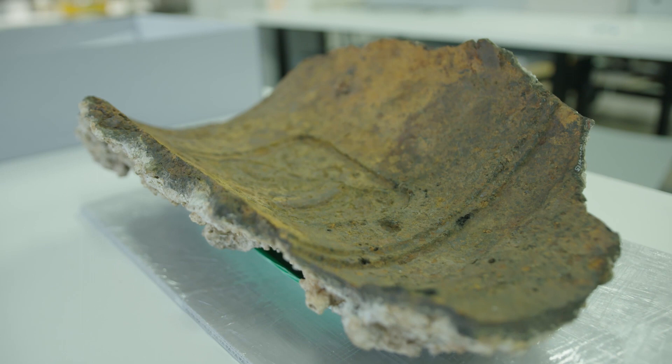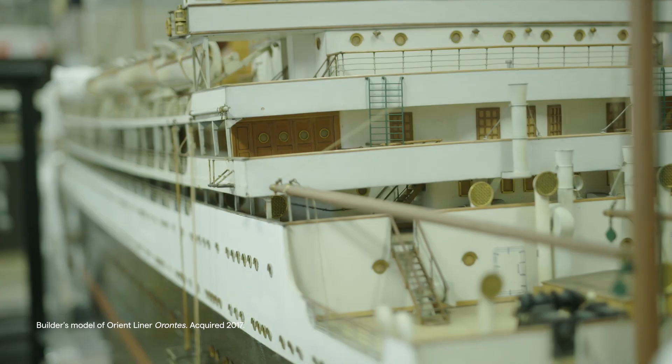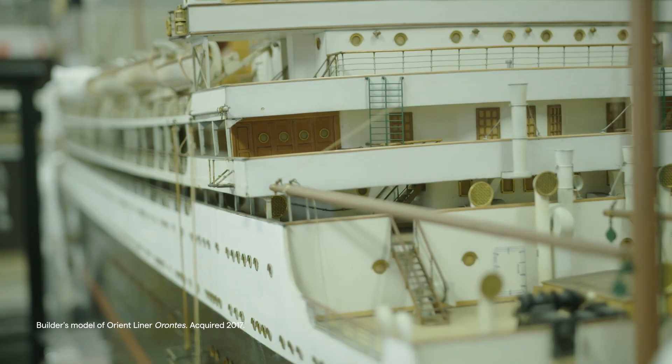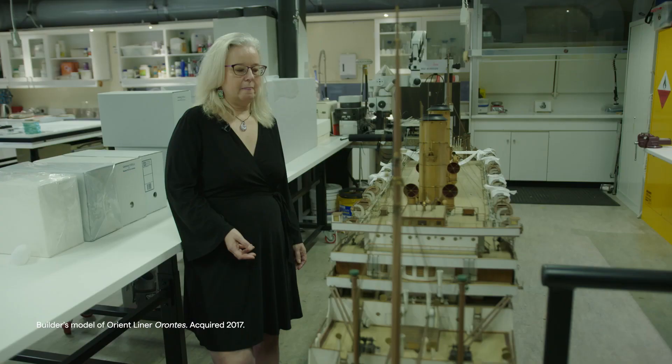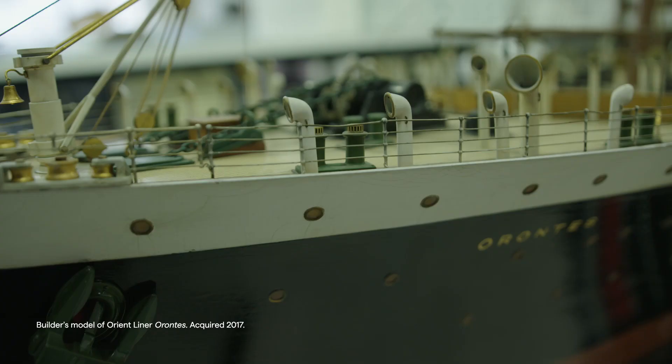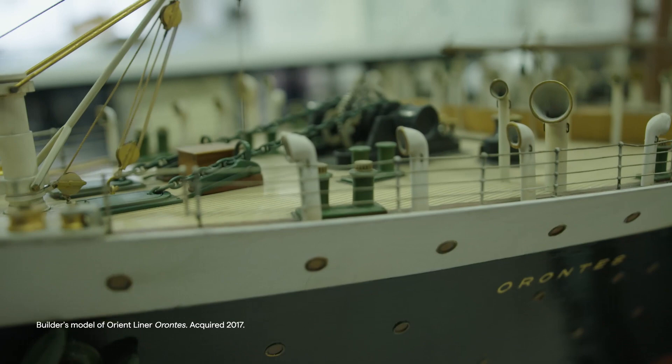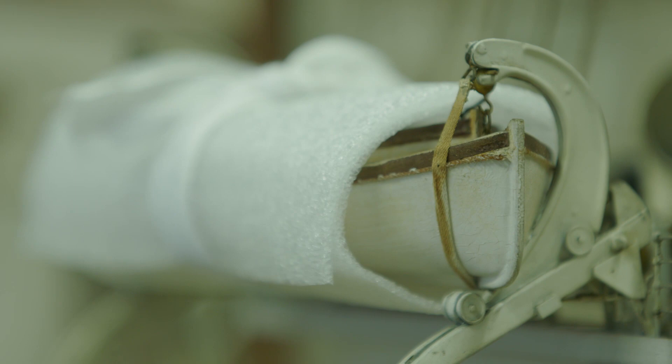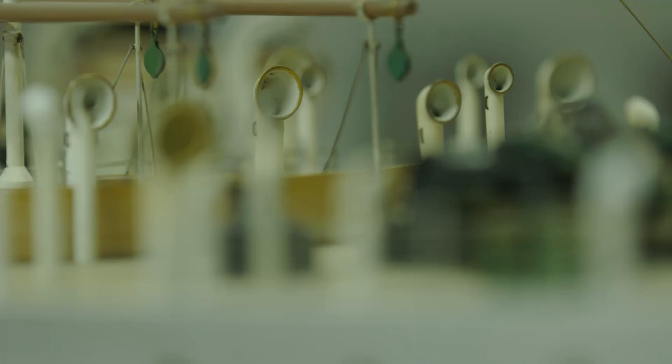This is an example of the objects in our collection, it's the builder's model of the Orontes. These models were built in order to sell the actual ships. The Orontes is quite significant because it was used to bring people to Australia, but it also carried troops during the war back to Australia.